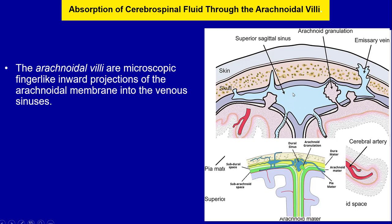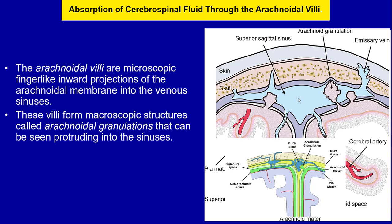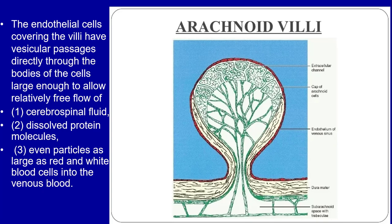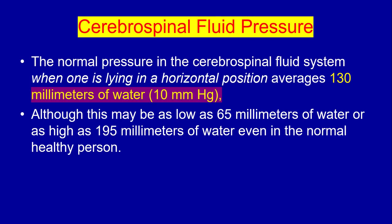Absorption of cerebrospinal fluid through the arachnoid villi: arachnoid villi are microscopic finger-like inward projections of the arachnoid membrane into the venous sinuses. These villi form microscopic structures called arachnoid granulations that can be seen protruding into the sinuses. The endothelial cells covering the villi have vesicular passages directly through the body of the cell, large enough to allow relatively free flow of cerebrospinal fluid, dissolved protein molecules, and even particles as large as red and white blood cells into the venous blood.